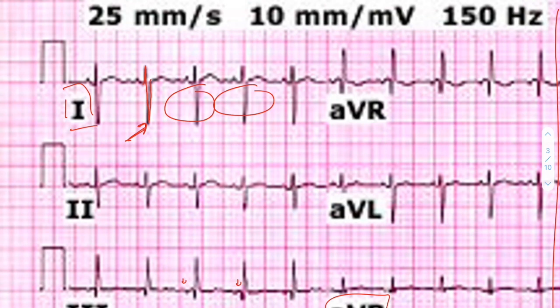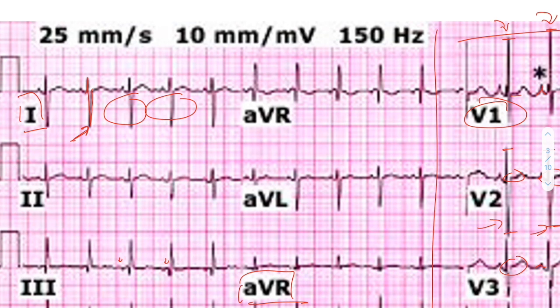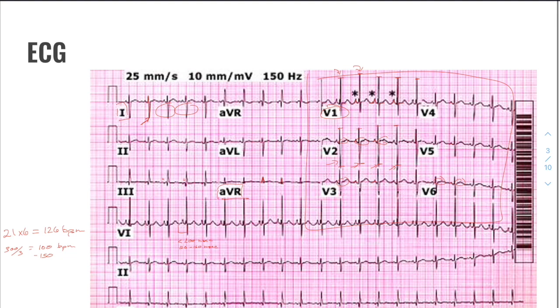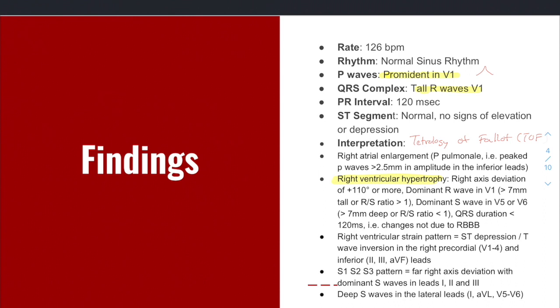Normally in lead one you have a mostly positive deflection, and this is flipped around where you have a majority negative deflection. And AVF also usually is predominantly positive. You can see this is predominantly a positive deflection in your R wave or your QRS complex. So that's going to point you in the direction of right axis deviation, which is going to be a common finding in anything that causes right ventricular hypertrophy.